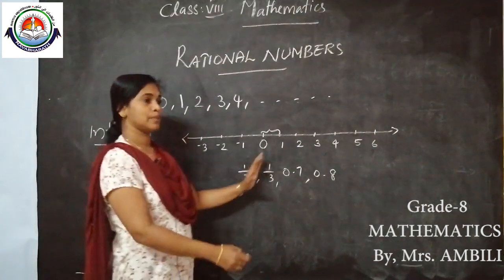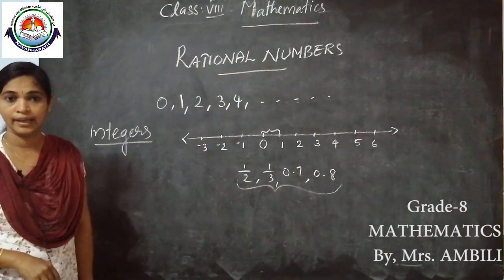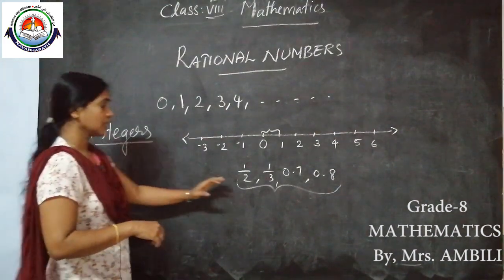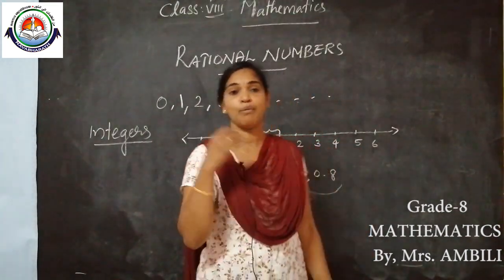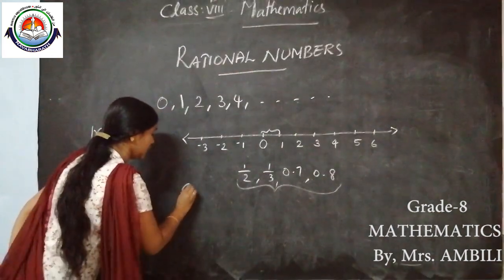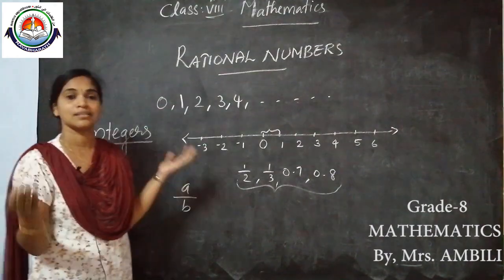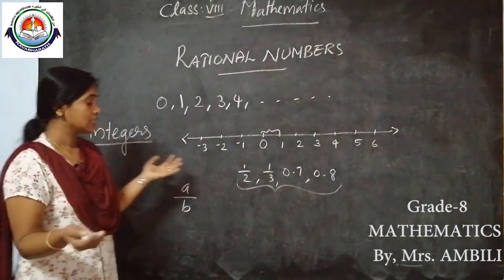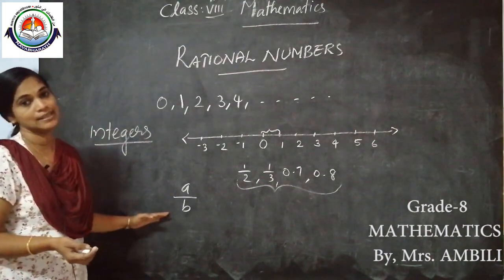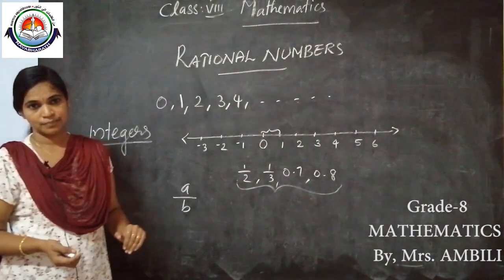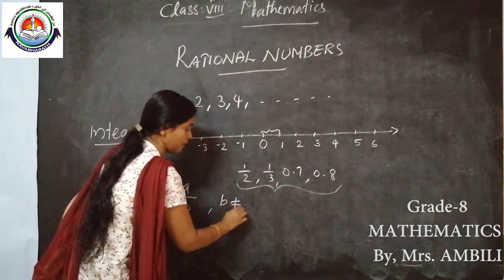Including all these numbers — these numbers are also known as rational numbers. What is a rational number? A rational number means a number that can be expressed in the form of A by B. If a number can be expressed in A/B form, that number is known as a rational number. And one condition is there: B should not be 0.